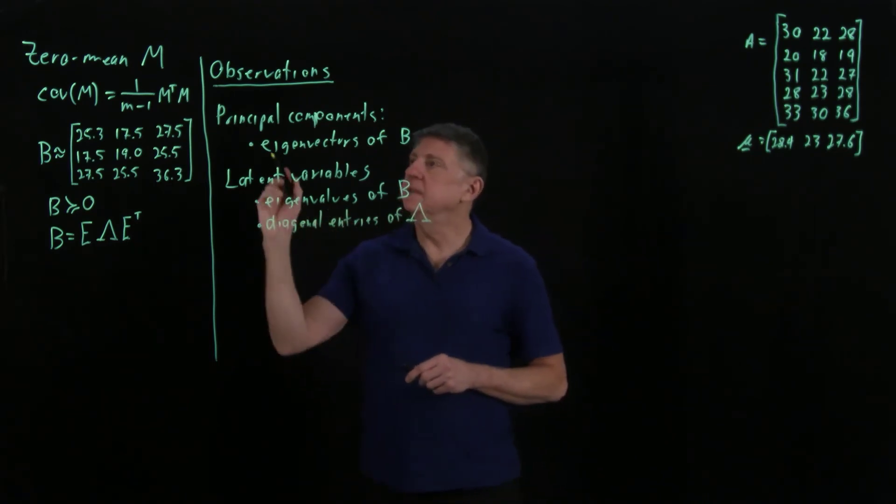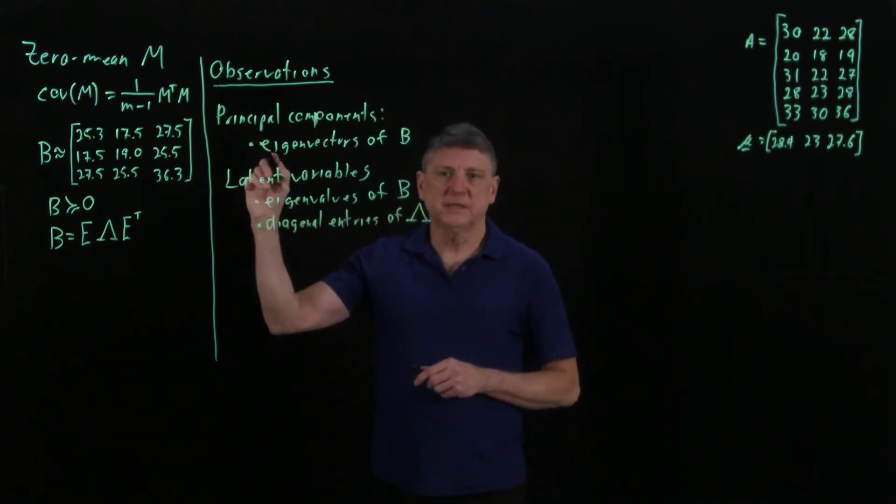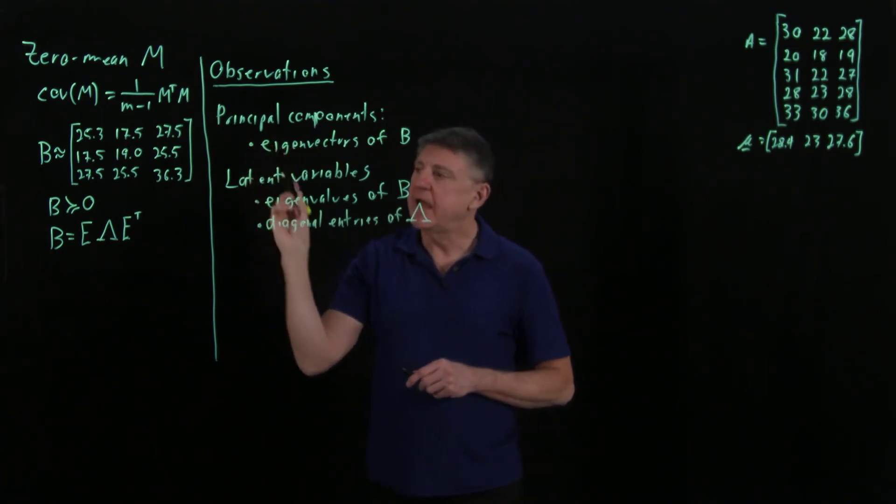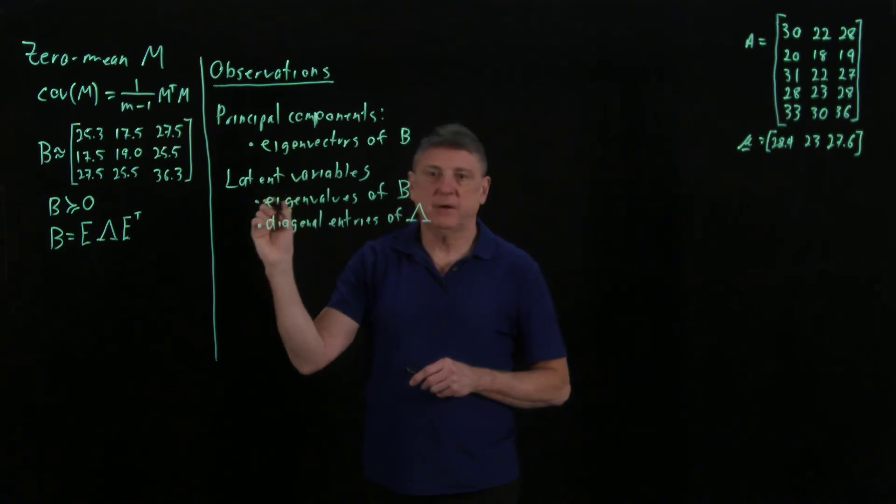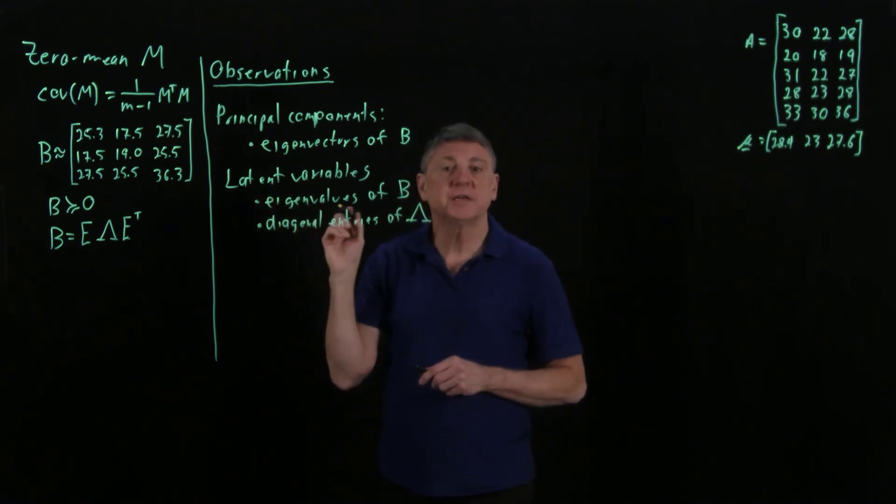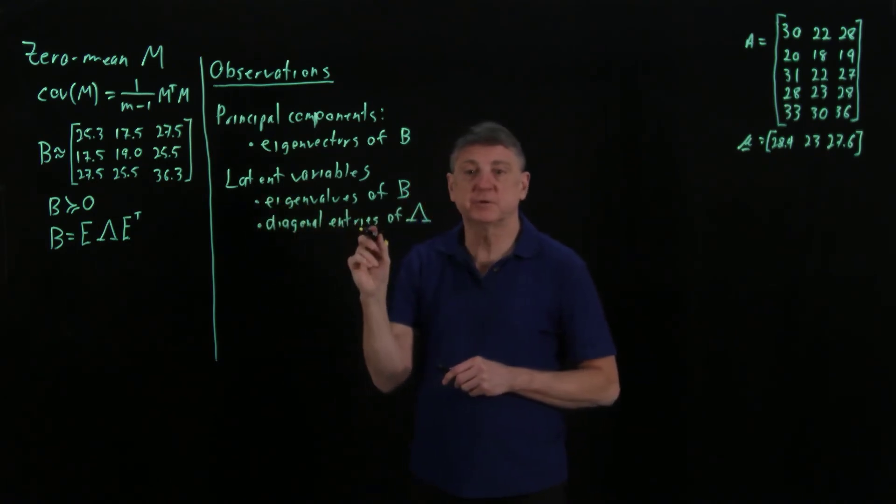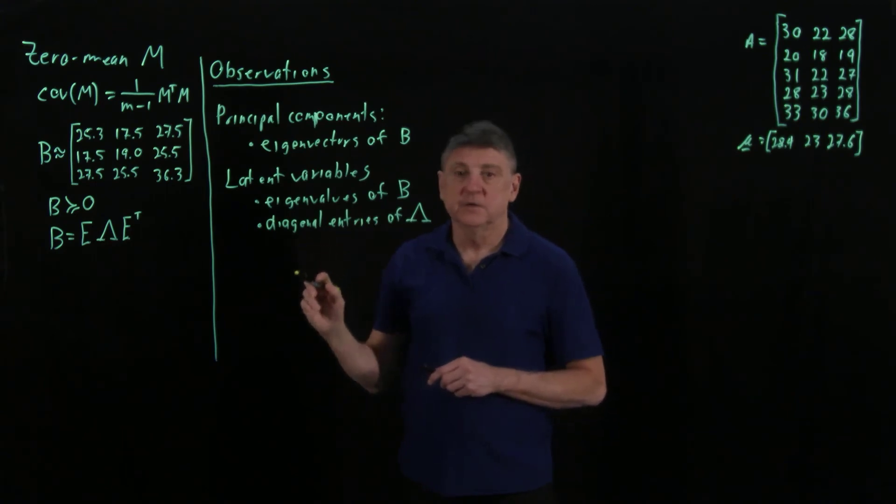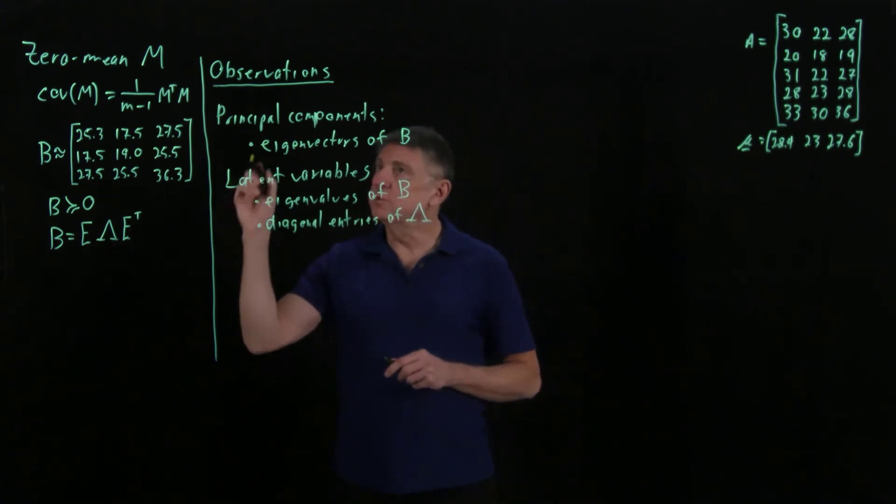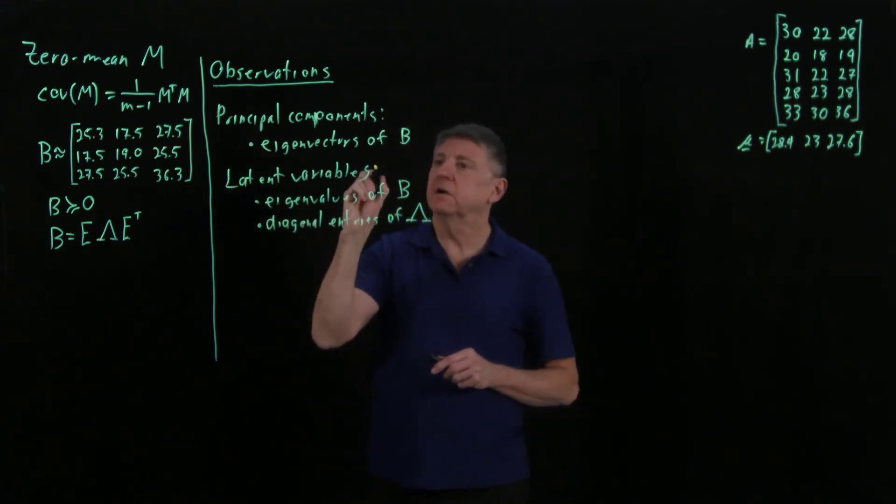The principal components tell us the main ways that the variables are related, and the latent variables tell us how much each component contributes to the covariance. So those are two of the key concepts.